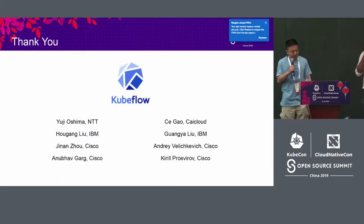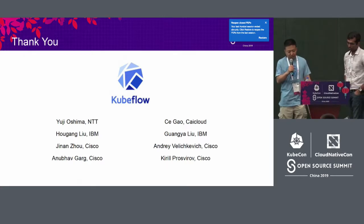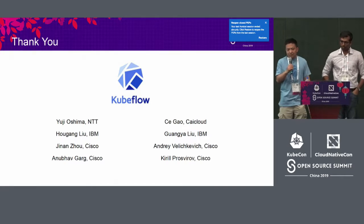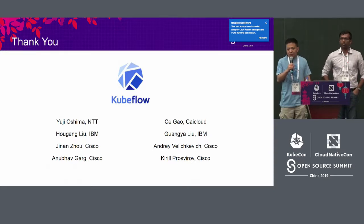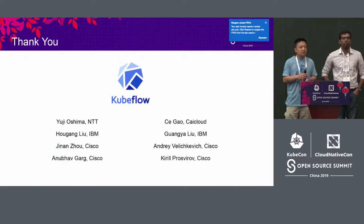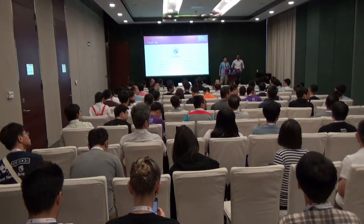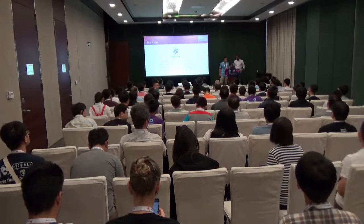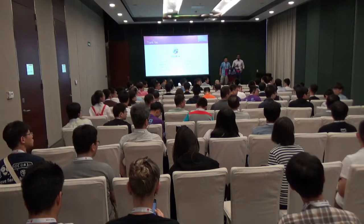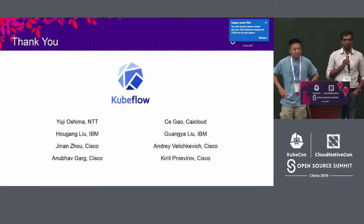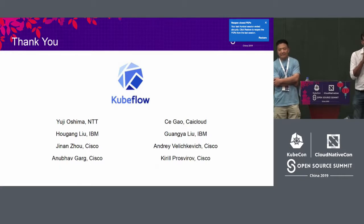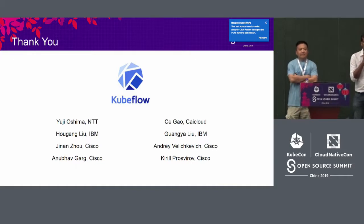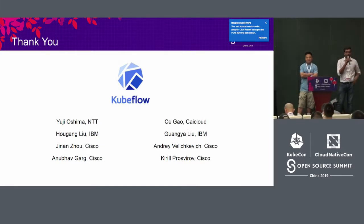We want to thank many contributors, some in the audience today — NTT, Guy Cloud, IBM, and Cisco have always been very helpful. That concludes our presentation; we'll take questions. One question: can you change the DB backend from the current implementation to something else? Currently in v1alpha2 (coming in about a month), that's not possible. But in version 0.3 — the next version — it will have a pluggable version where you can add any database by implementing the common interface.